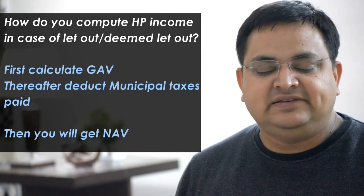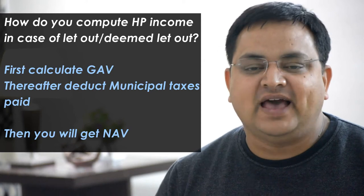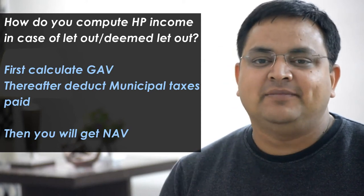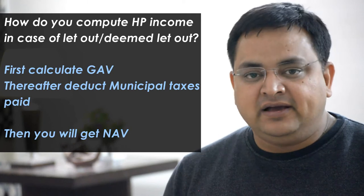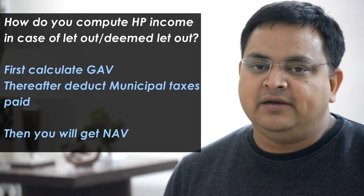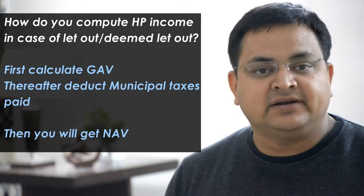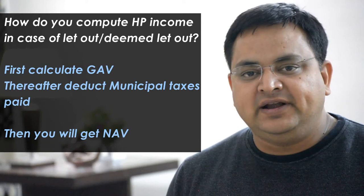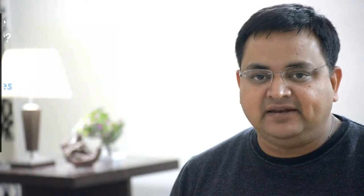As you know, for a let-out property you first calculate GAV (Gross Annual Value), then deduct municipal taxes to get NAV. Since this property is taxable in India, you can also deduct its municipal taxes. So DHS 4,000 multiplied by 18 rupees will be subtracted, and your NAV will be arrived at.